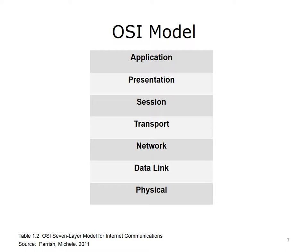There is a mnemonic that can be used to remember the layers. Starting at the physical layer: please do not throw sausage pizza away. By taking the first letter of every word in the mnemonic, you will have the first letter of the seven layers of the OSI model.